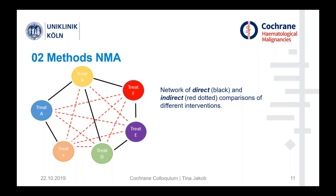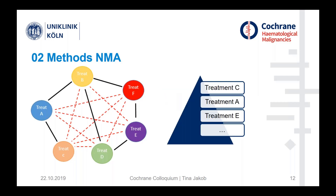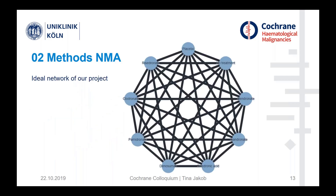This is what the methodology of network meta-analysis is all about. In the end, we hopefully have a hierarchy of treatment options — in this case treatment C would be the best, followed by treatments A and E. The network of our project shows all the different bone modifying agents as blue dots, but we don't have evidence for all connections as we would in an ideal world, so we also have direct and indirect comparisons in the end.